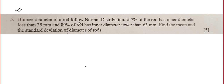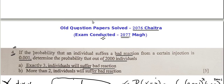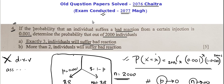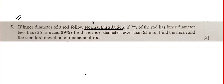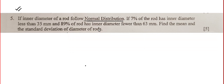Let us move to the next question. If the inner diameter of a rod follows normal distribution — I always feel that normal distribution and gamma distribution have one advantage: the students don't have to worry about identifying the distribution, as it will be clearly mentioned. Percentage is given, that means the probability is given, which means this is a question related to inverse probability.